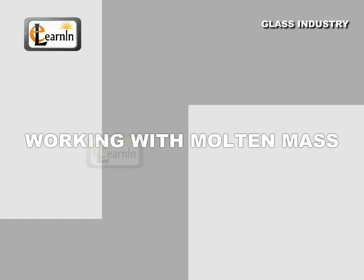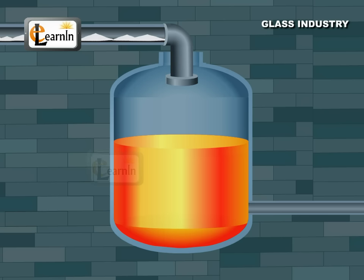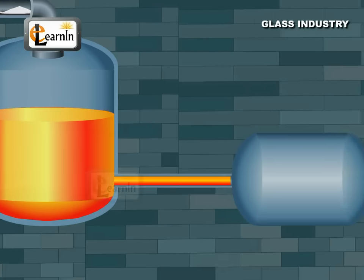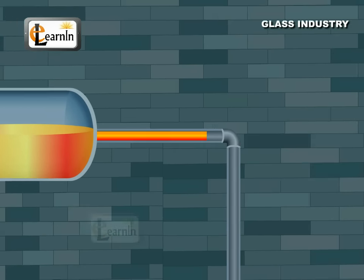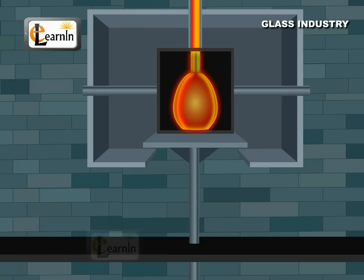Working with molten mass. The fused mass obtained in the above step is allowed to cool but still maintained in a liquid state. The liquid glass is poured into molds of required shapes.